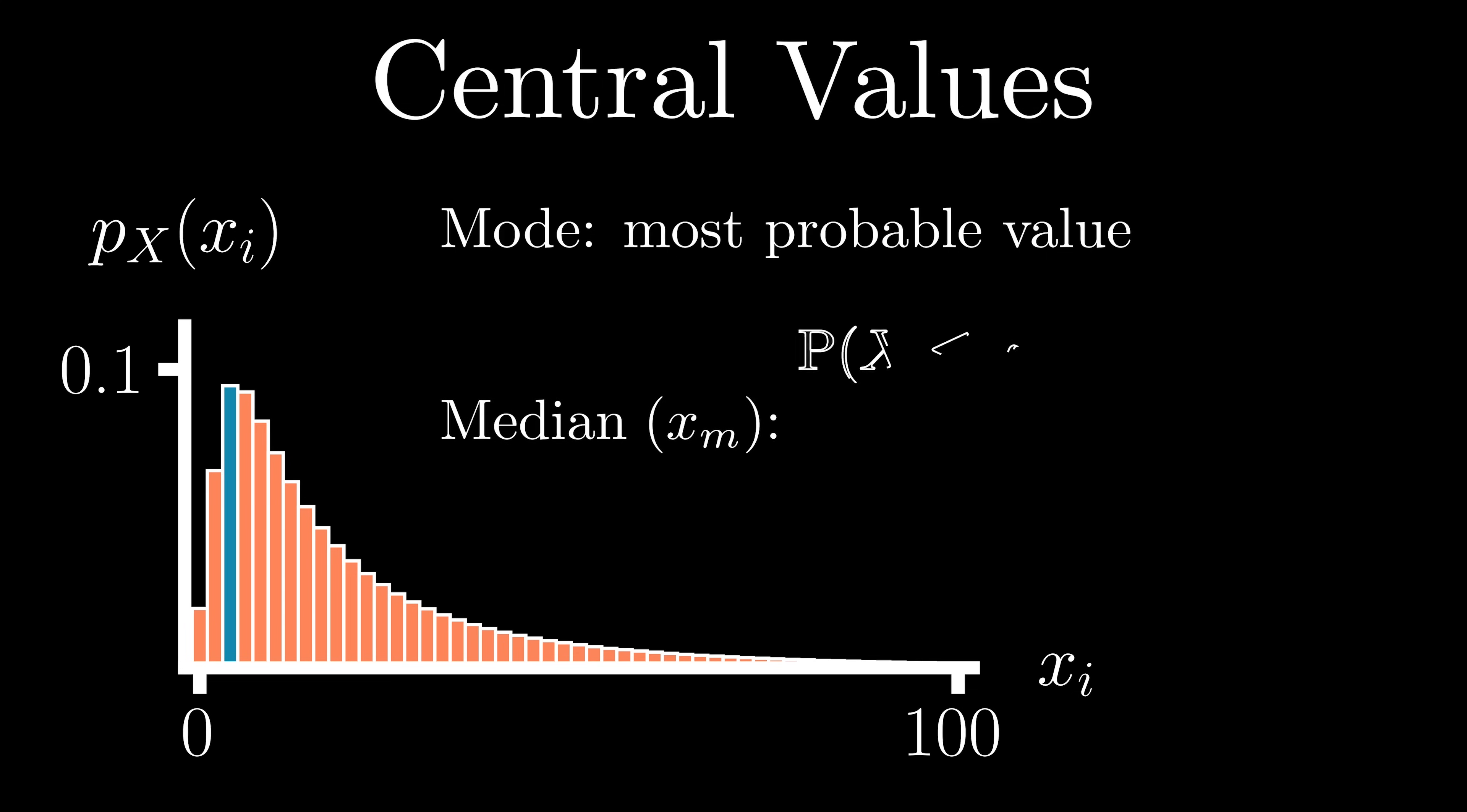One way to do so is the median, where we are looking for the value, x sub m, where there is a 50% chance that X could be both below and above it.